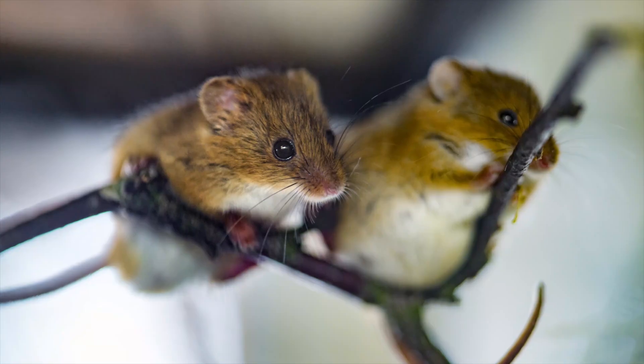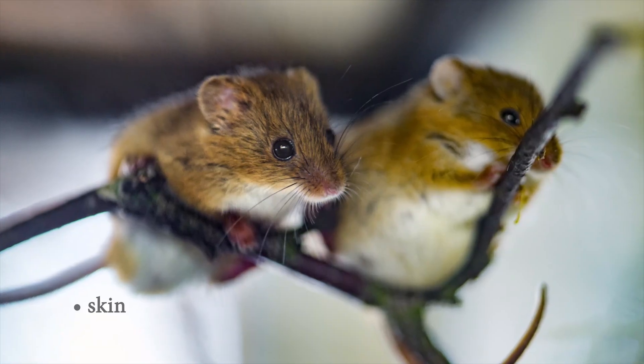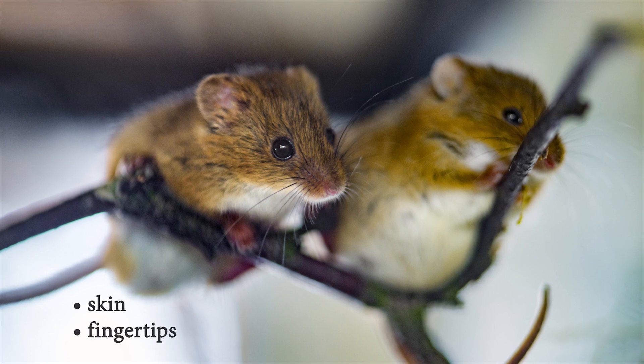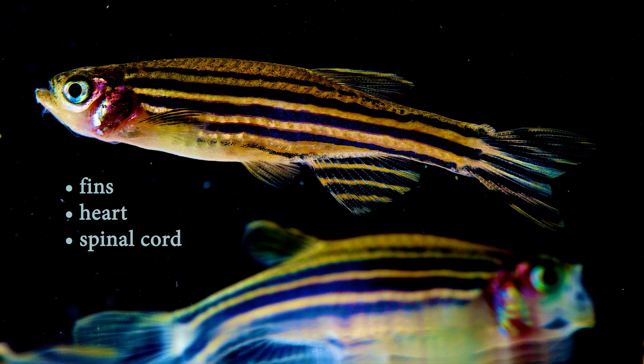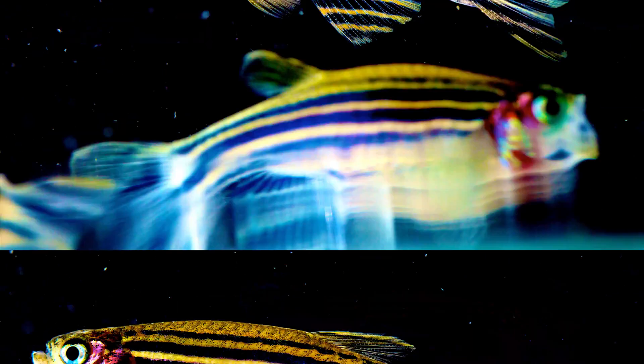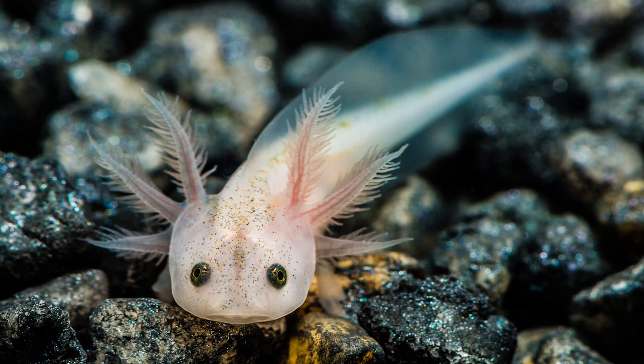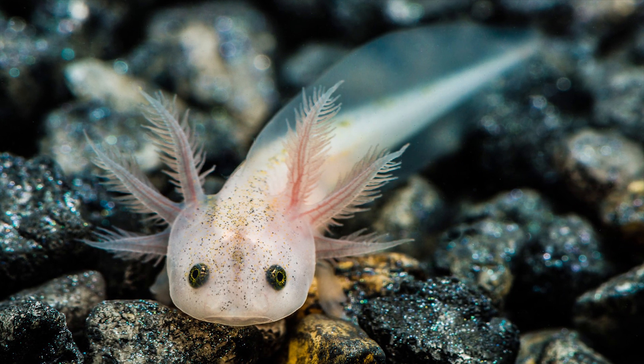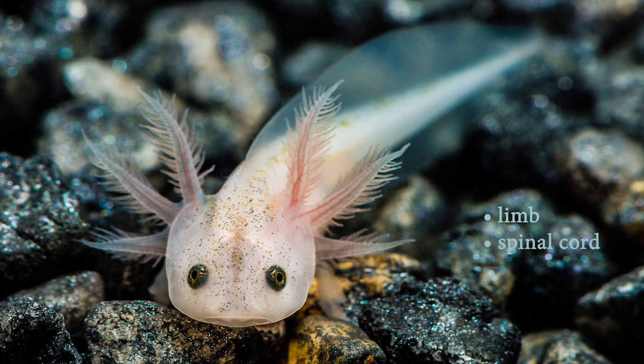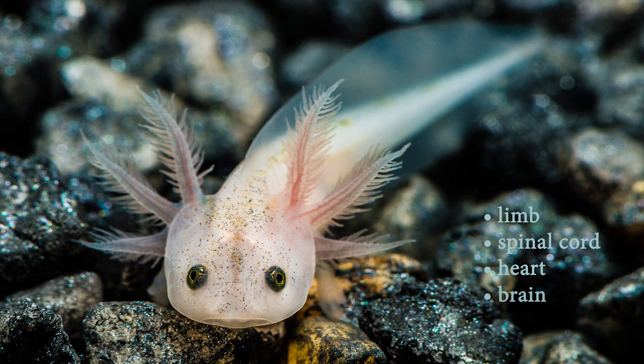Mice regenerate some tissues like skin and tips of their fingers. Zebrafish can regrow their fins, heart, and spinal cord when damaged. The happy little axolotls have the capacity to regenerate entire body parts, including limbs, spinal cord, heart, and even parts of their brain.